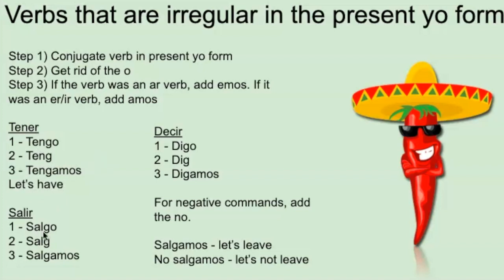For 'salir': 'salgo' is the present tense yo form. Get rid of the o — 'salg' — then 'salgamos' — 'let's leave.' And the negative would be 'no salgamos' — 'let's not leave.' And 'decir' gives us 'digamos.' It's also the same as the subjunctive conjugation in the nosotros form.